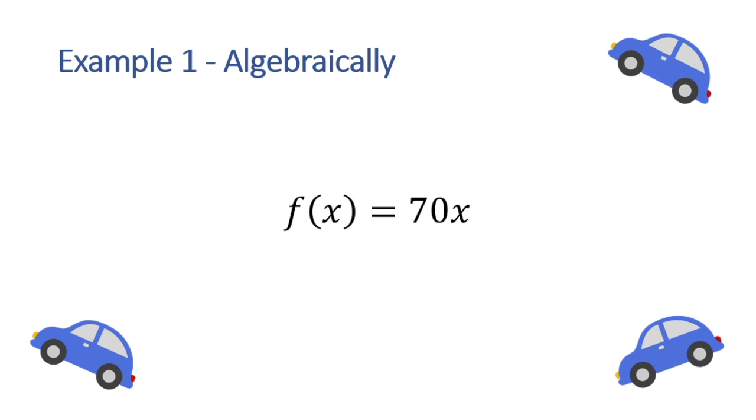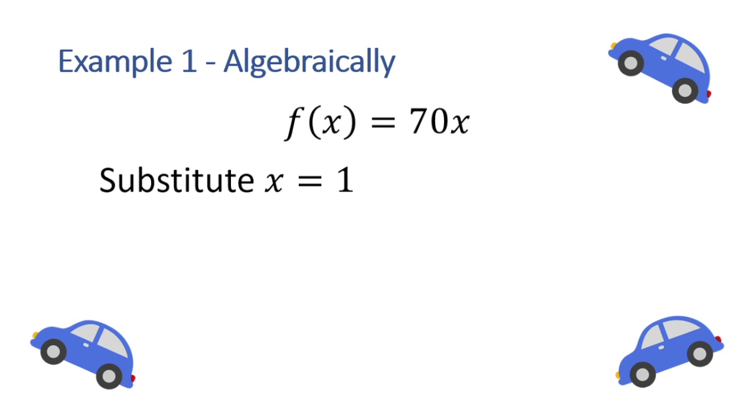For example, to see how far we've traveled after one hour, we replace the x with a 1 and simplify the right side. This gives us 70, which makes sense because we've said that after one hour, we've traveled 70 miles. We can do this for two hours as well. Plugging in 2 for x and simplifying the right side, we get 140, which also agrees with the numbers we've been getting all along. Note that we want the results from each of these representations to agree as they are all expressing the same relationship, just in a different way.